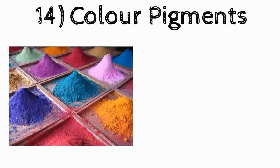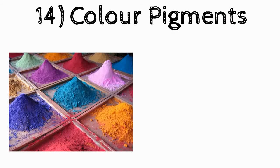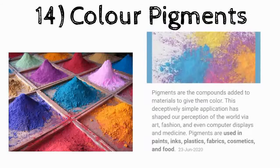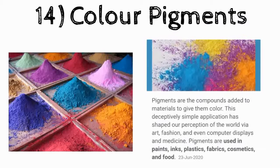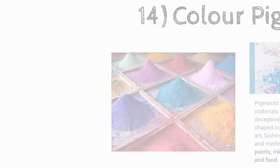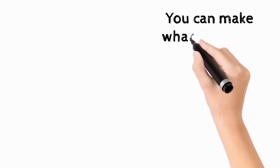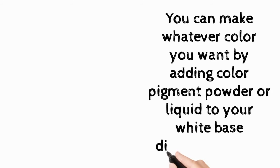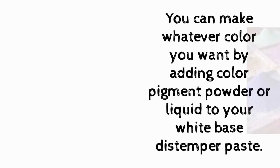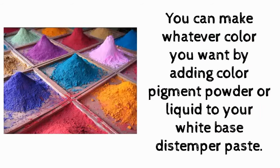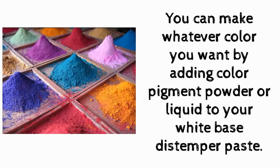You can add color pigments according to your preference, but do not add more than 20 to 50 milliliters of any color. You can make whatever color you want by adding color pigment powder or liquid to your white base distemper paste.